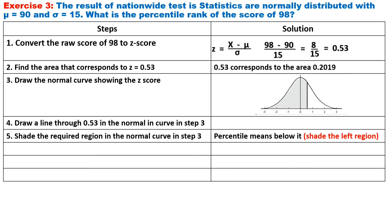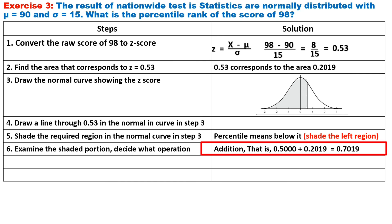Step five, shade the required region in the normal curve in step three. Percentile means below it, so we need to shade the left region. Step six, examine the shaded portion. Decide what operation. It requires addition since it covers two half faces of the normal curve. That is 0.5000 plus 0.2019 equals 0.7019.